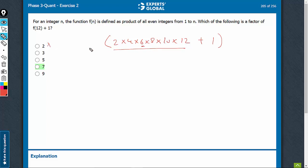See, this is a multiple of 6, so it's a multiple of 3. This entire thing is a multiple of 3. So when we add 1 to it, 3 cannot be a factor of this.